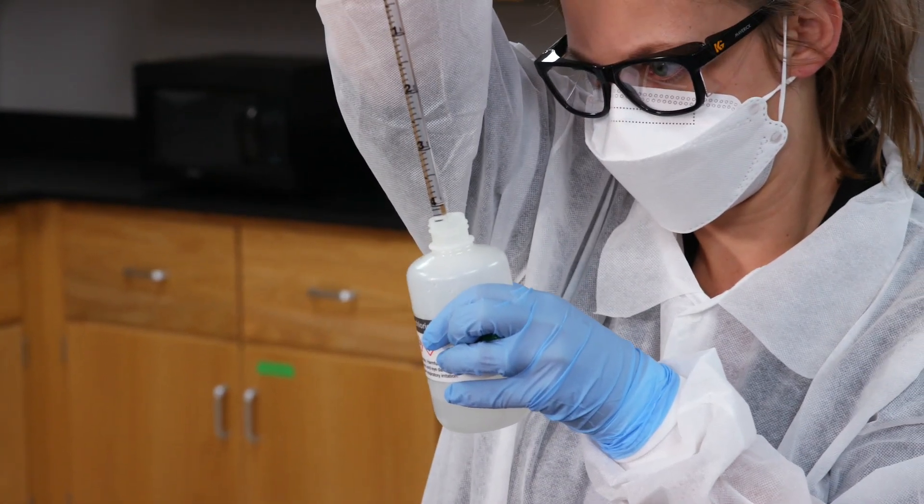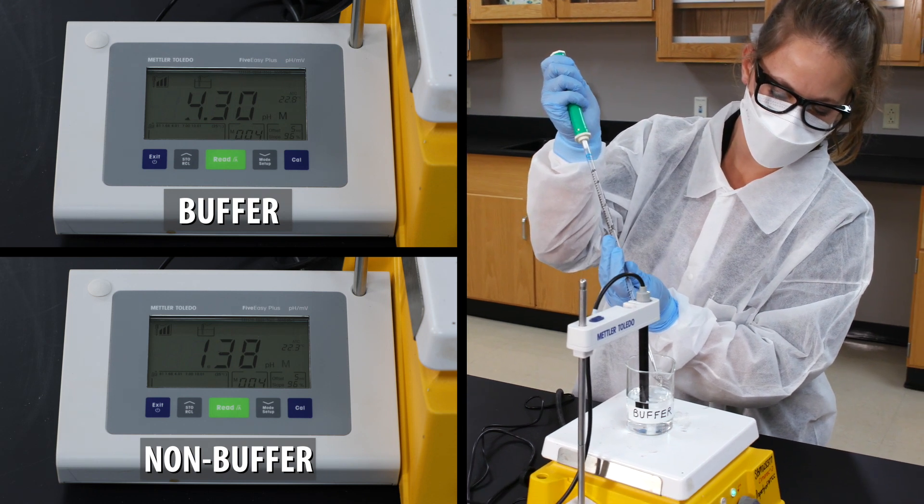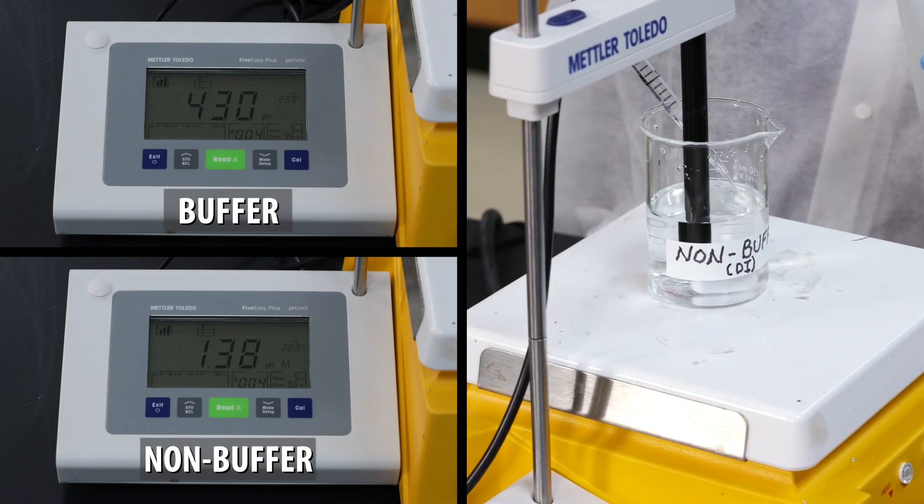Add another milliliter of hydrochloric acid to each beaker. The buffer continues to neutralize the acid. Its pH is 4.30. The deionized water drops to 1.38.